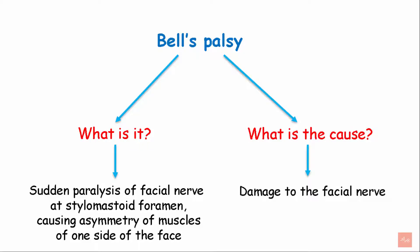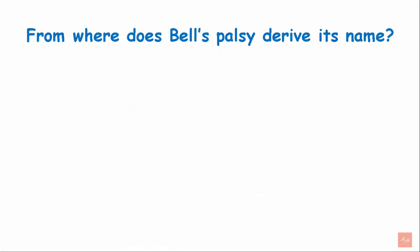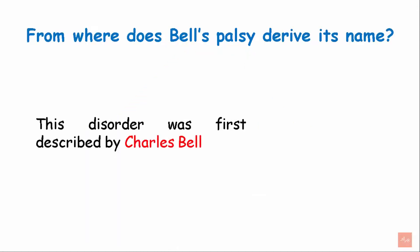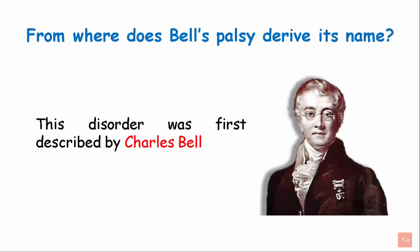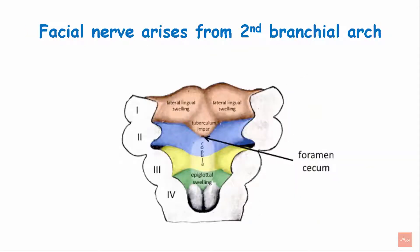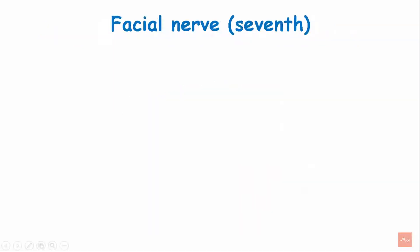Damage to the facial nerve causes Bell's Palsy. This disorder was first described by Charles Bell. There are five brachial arches found in the embryonic phase, and the facial nerve arises from the second brachial arch.